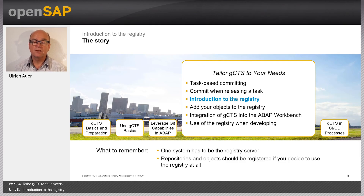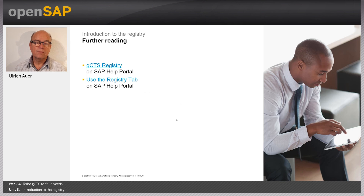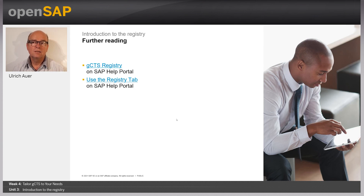What you should keep in mind: the gCTS registry helps you work with various repositories, ensuring each object is assigned to no more than one repository. It also allows a simpler TMS configuration – you no longer need to maintain transport layers, transport routes and several target systems for each connected repository; you can use one dummy virtual SID for all repositories. Specific documentation about the gCTS registry is available in the SAP Help Portal. Thank you very much for listening. I will hand over to the next unit where we will see how the gCTS registry is populated. Goodbye.